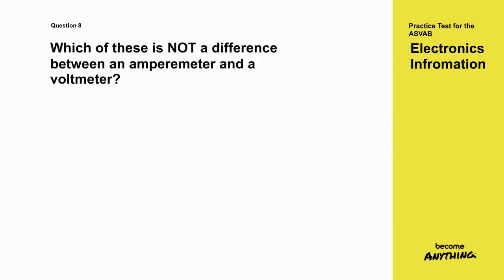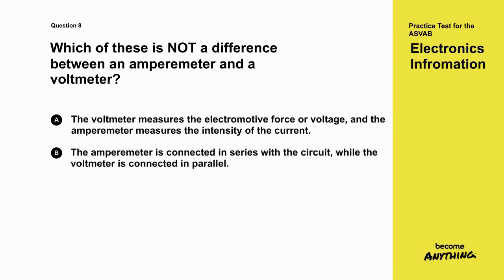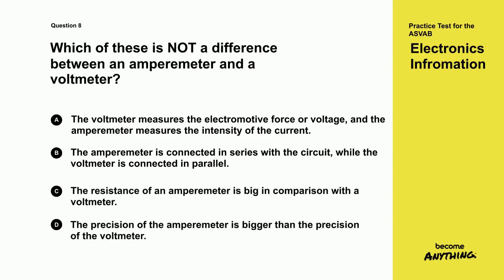Question 8. Which of these is not a difference between an amperometer and a voltmeter? A. The voltmeter measures the electromotive force or voltage, and the amperometer measures the intensity of the current. B. The amperometer is connected in series with the circuit, while the voltmeter is connected in parallel. C. The resistance of an amperometer is big in comparison with a voltmeter. D. The precision of the amperometer is bigger than the precision of the voltmeter.